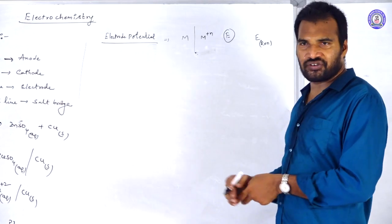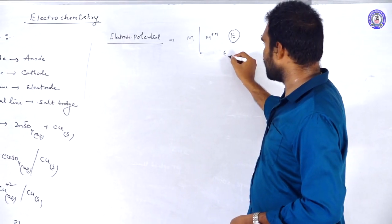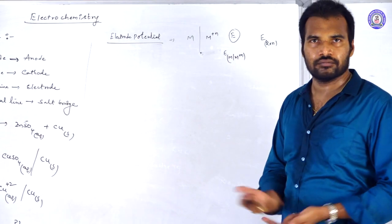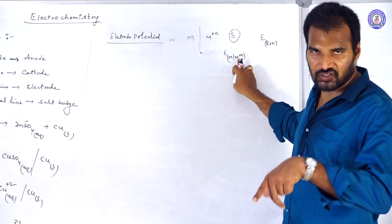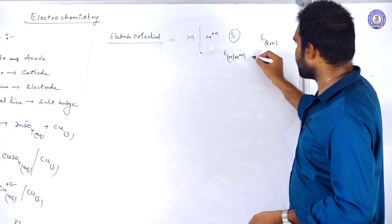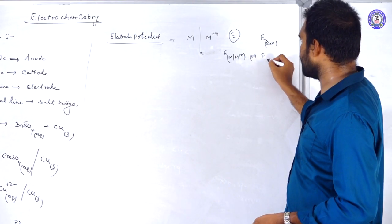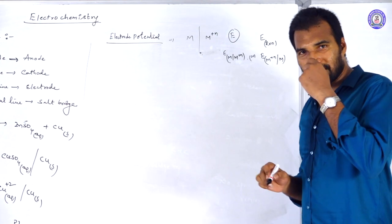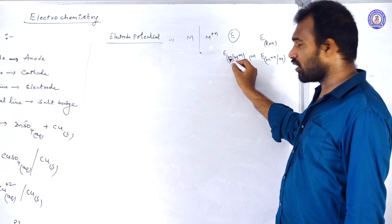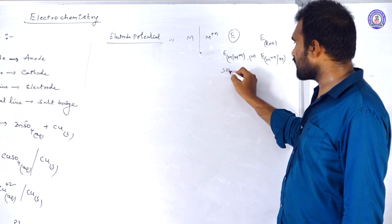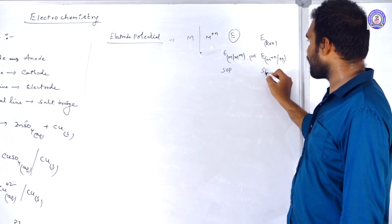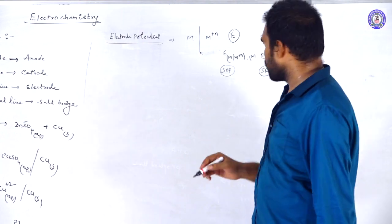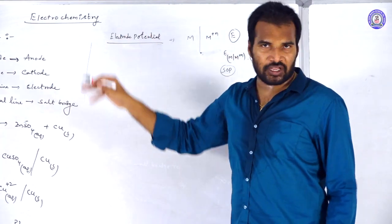For oxidation we write E(M | M⁺), meaning M becomes M⁺ — this is the oxidation potential (SOP). For reduction we write E(M⁺ | M) — this is the reduction potential (SRP). The difference between electrode potential (E) and standard electrode potential (E⁰) is important to remember.